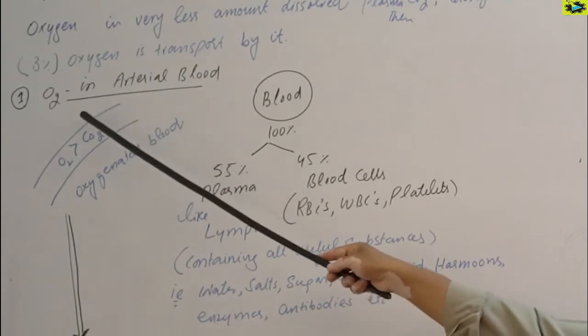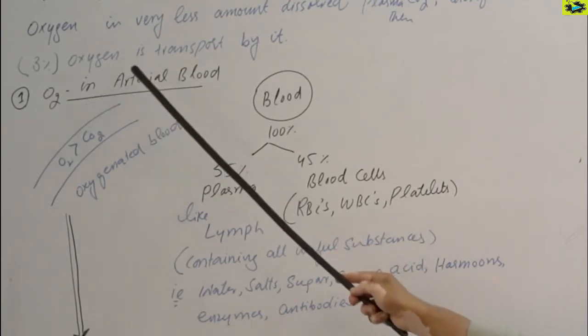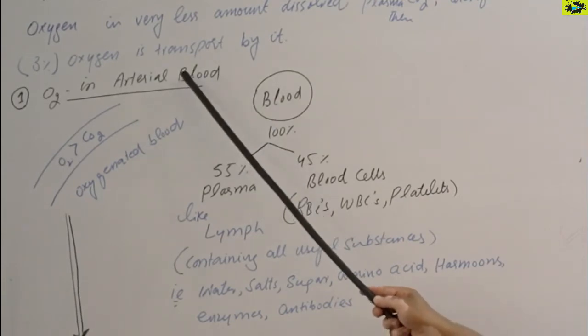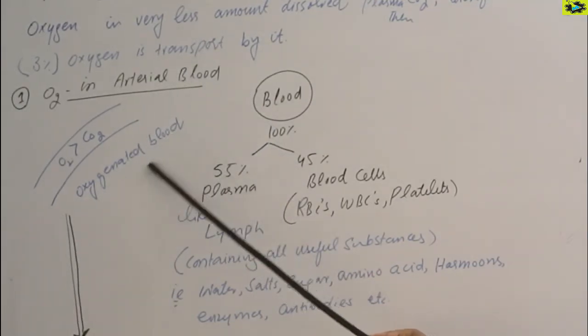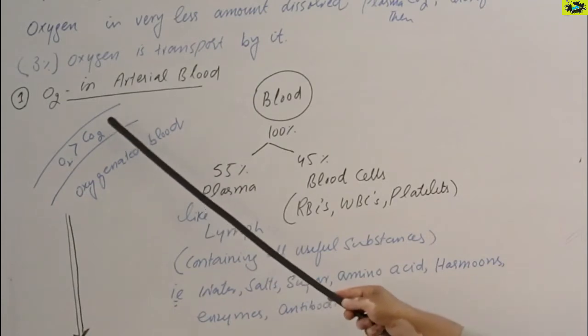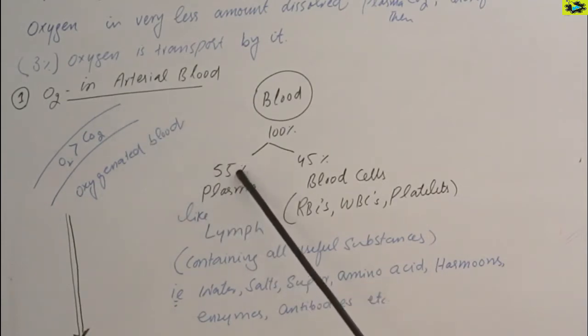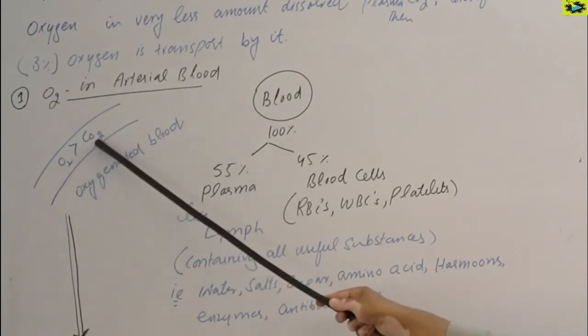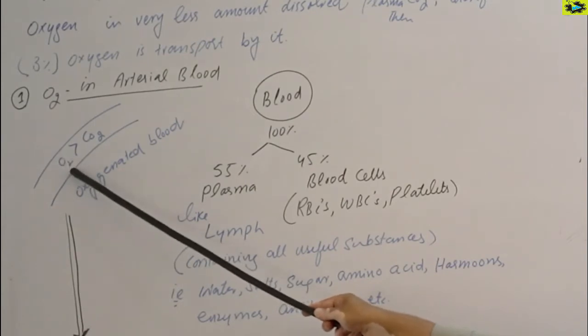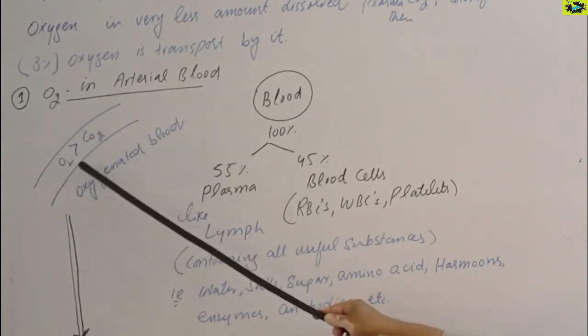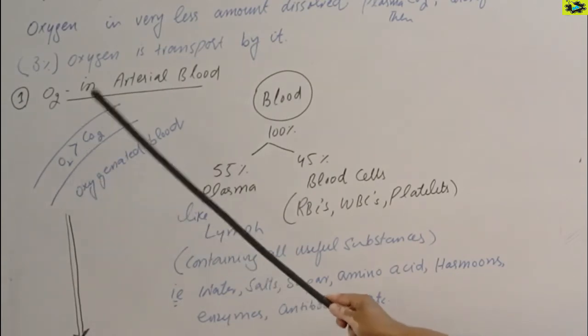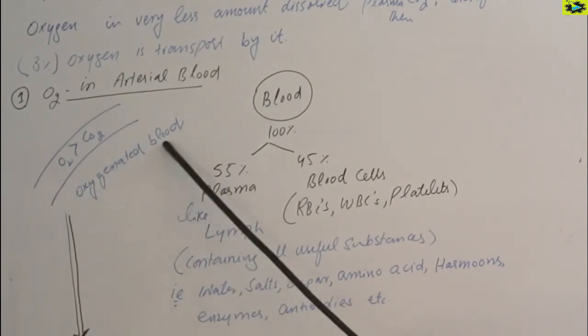The topic now is the oxygen transport in the arterial blood. Inside the arterial blood, we can say that it has the oxygenated blood and this oxygenated blood contains the blood plasma like about 55%. The oxygen is greater than the carbon dioxide. Therefore, the amount of oxygen here it is called as the oxygenated blood.